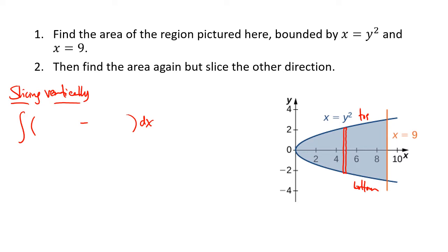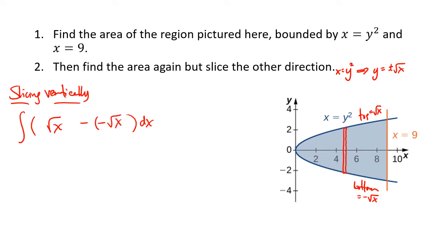Since we're integrating with respect to x, the functions have to be solved for y. When we take x equals y squared and solve for y, we get y equals plus or minus the square root of x. So my top function is the positive square root of x, and my bottom function is the negative square root of x. The integrand is radical x minus negative radical x.